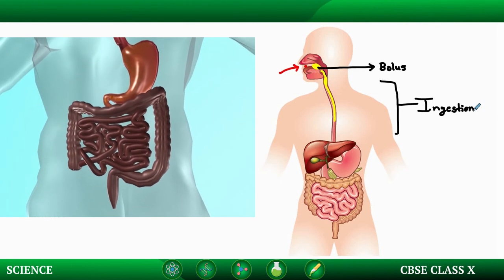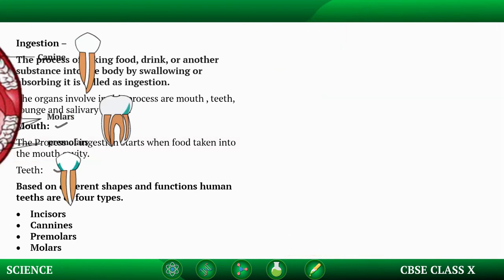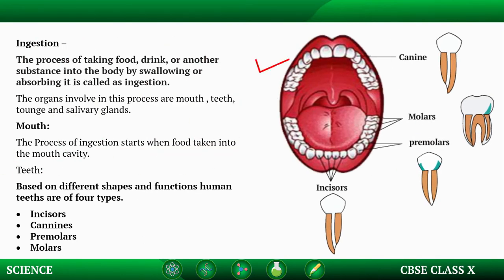The organs involved in the process of ingestion are the mouth, teeth, tongue, and salivary glands. The process of ingestion starts when food is taken into the mouth cavity. The mouth is bordered by upper and lower lips, which help in closing the mouth while swallowing food.